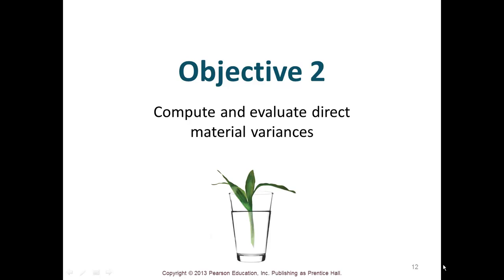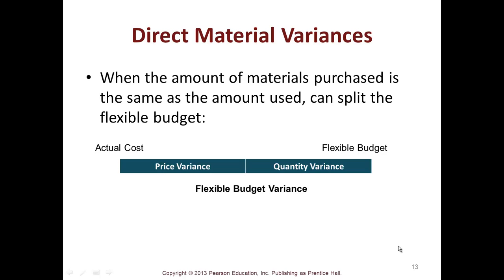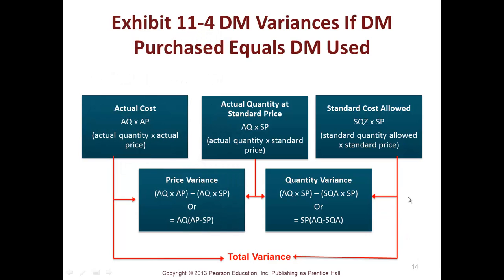Objective two is to compute and evaluate direct material variances. When the amount of materials purchased is the same as the amount used, you can split the flexible budget between a price variance and a quantity variance. Exhibit 11-4 in your book shows that actual cost equals actual quantity times actual price; actual quantity at standard price equals actual quantity times standard price; and standard cost allowed equals standard quantity allowed times standard price.